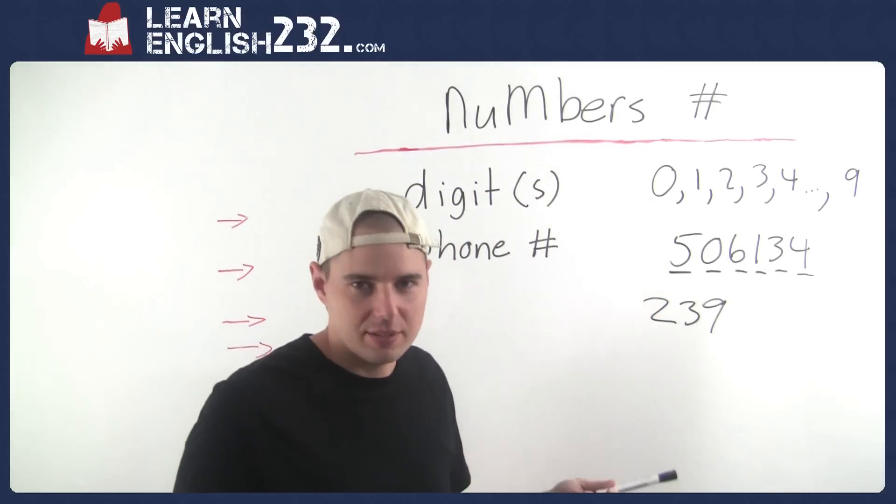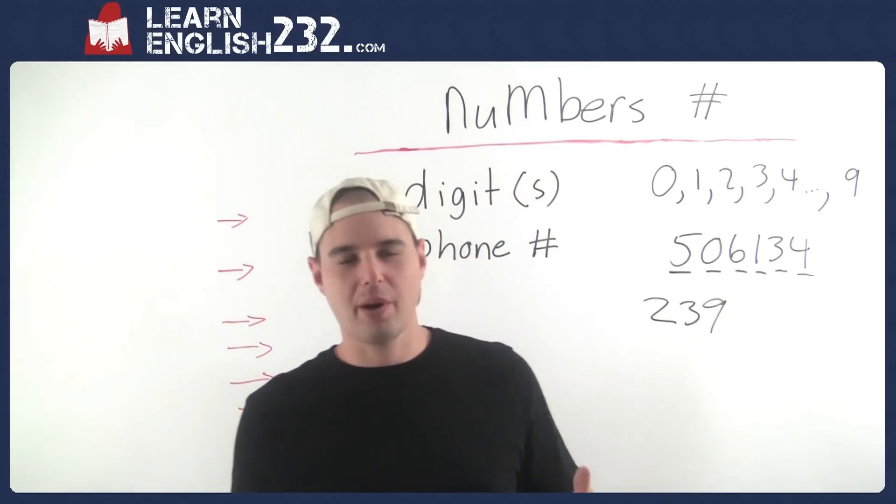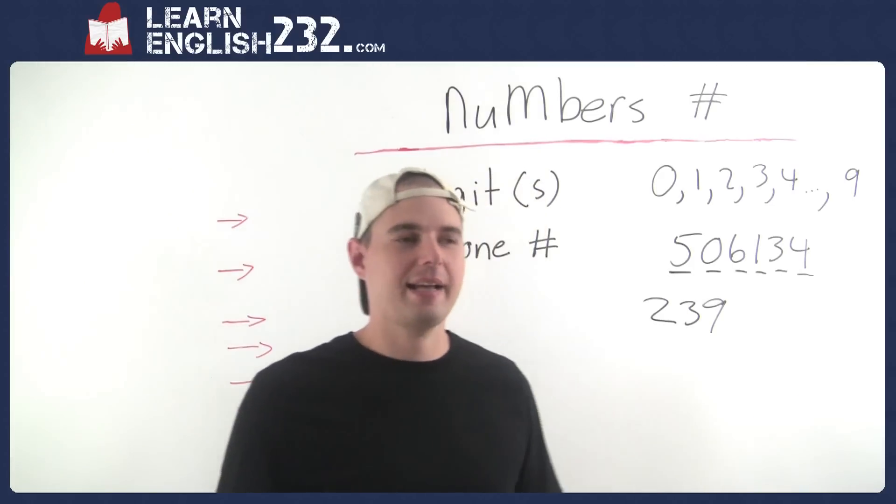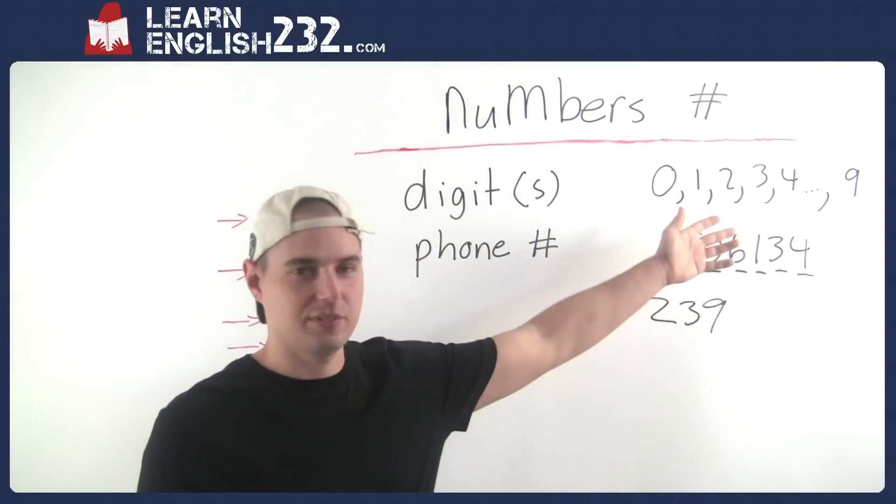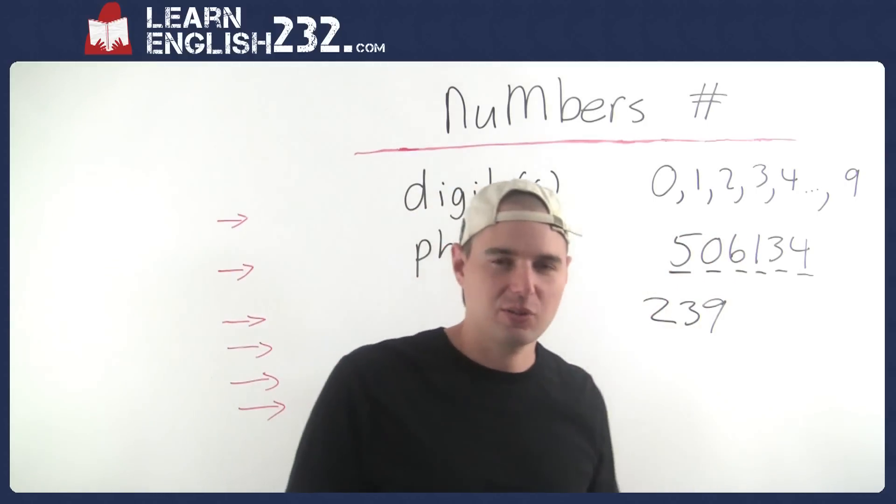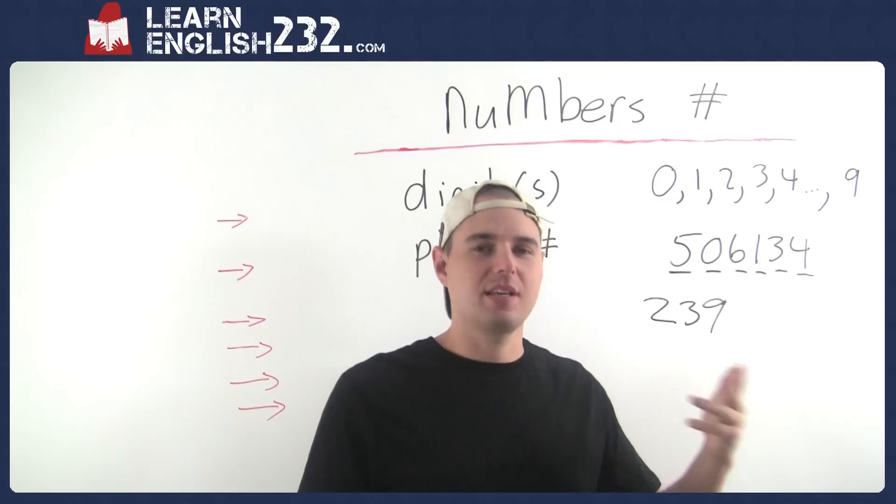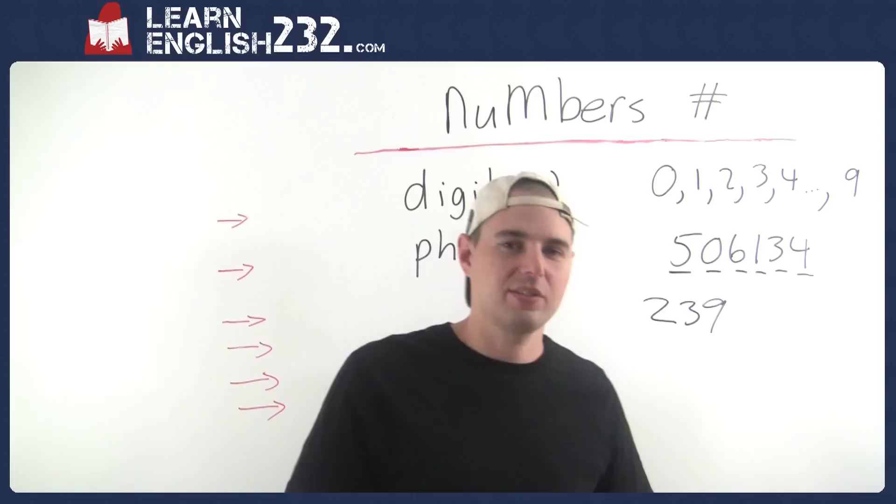Now if someone says give me your digits, or if you're trying to chase down a girl that you think is hot, you like her in the bar or wherever you meet her, Starbucks, down the street, in your class, you ask her for her phone number, which is a series of digits. That is getting her digits or getting someone's digits. If you say give me your digits, it means give me your phone number.